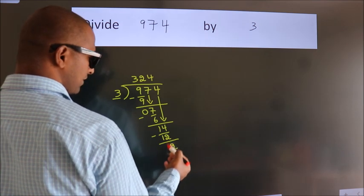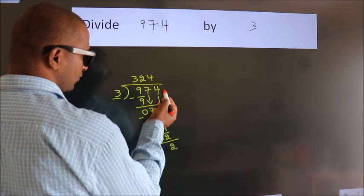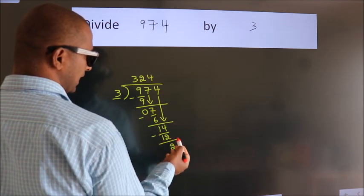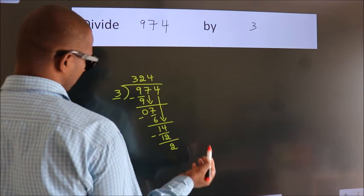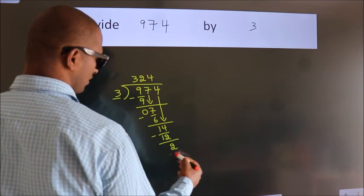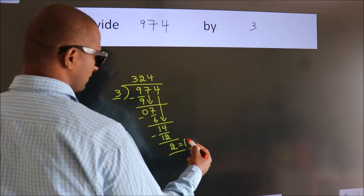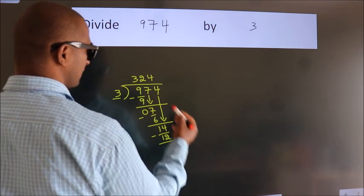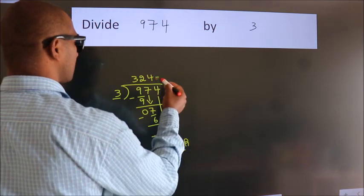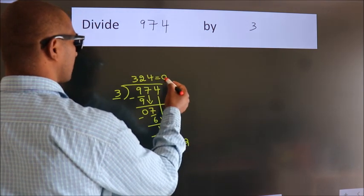After this, there are no more numbers to bring down, so we stop here. This is our remainder. This is our quotient.